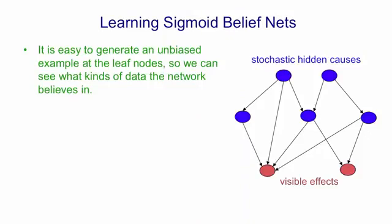Now I'm going to talk about why it's difficult to learn sigmoid belief nets. As we've seen, it's easy to generate an unbiased sample once you've done the learning. That is, once we've decided on the weights in the network, we can easily see the kinds of things the network believes in by generating samples from its model.